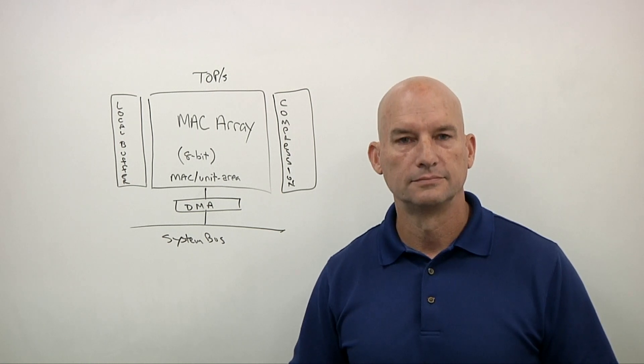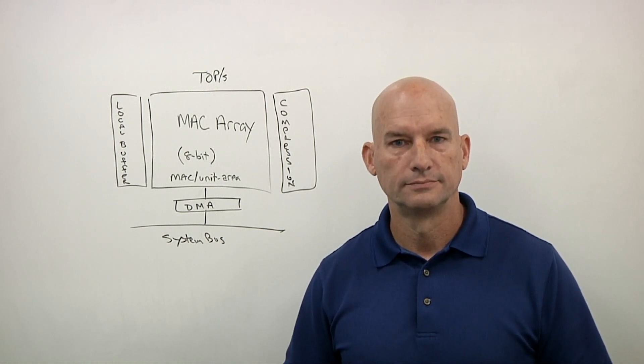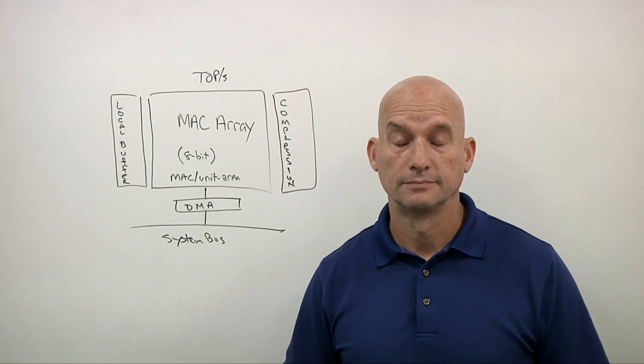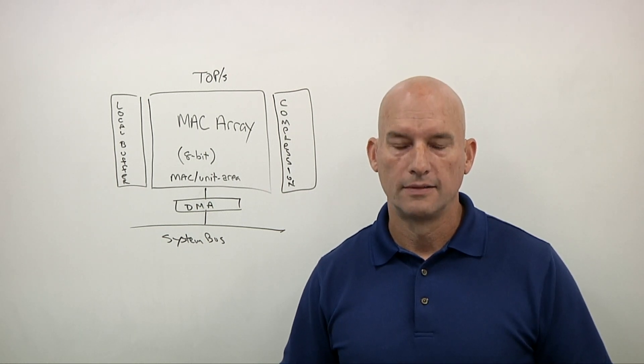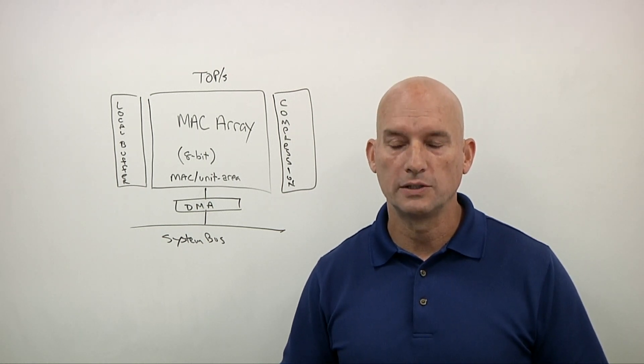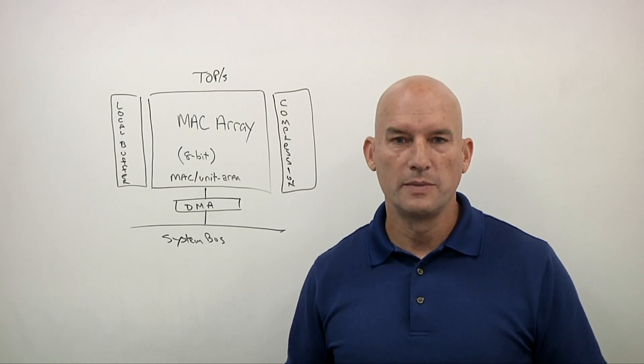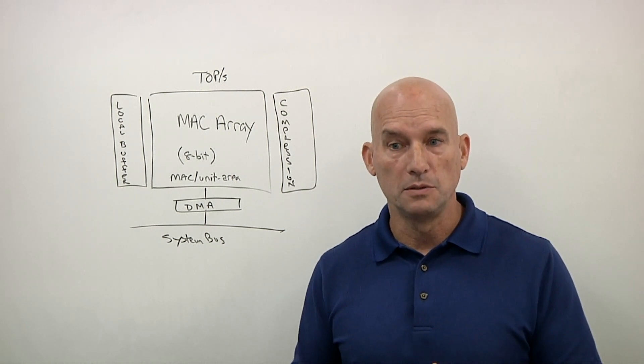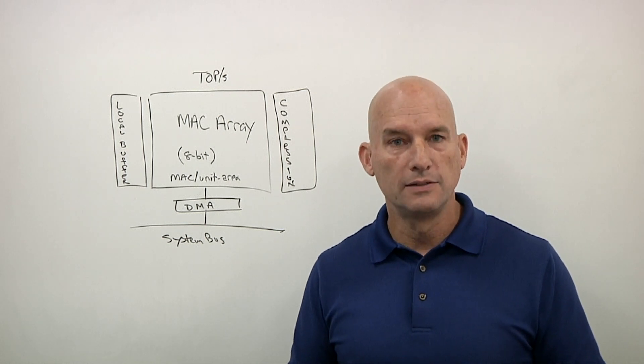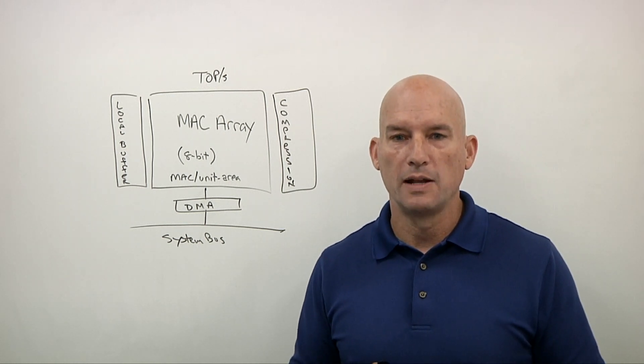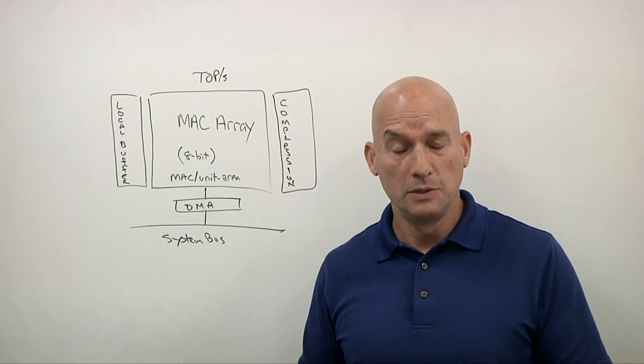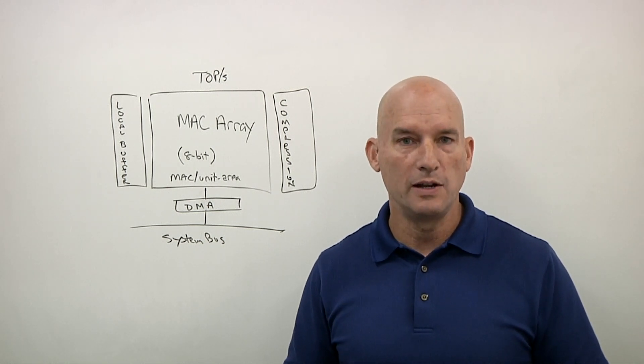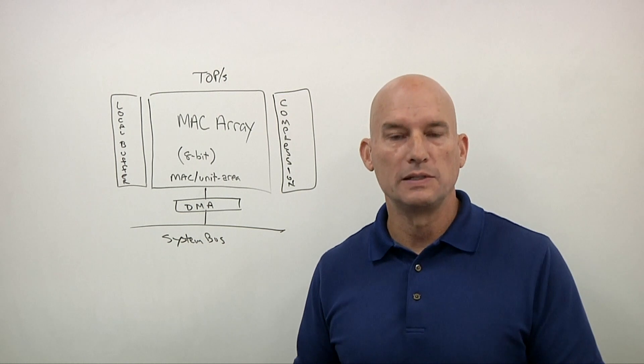So what happens if you take an existing architecture and put a bunch of Macs in there versus designing completely from the ground up? What's the difference in terms of performance, in terms of power, in terms of throughput? Good questions. If you start with the premise that existing architectures, a CPU, a GPU, a DSP, were balanced and had the right balance between compute and throughput for the targets of what they were originally created for, and say, let me repurpose this.